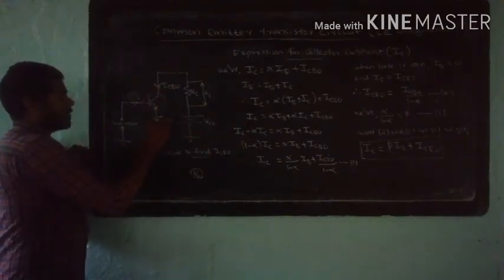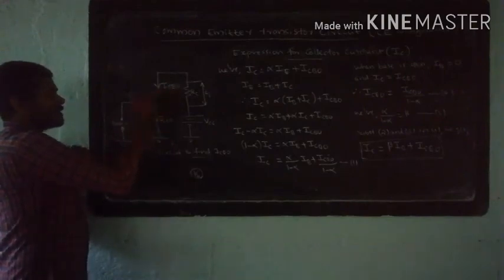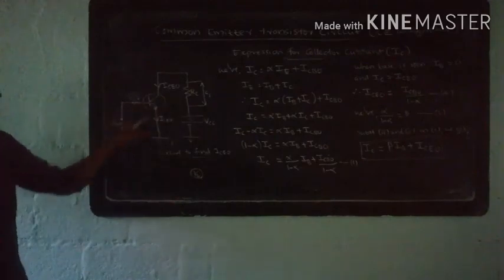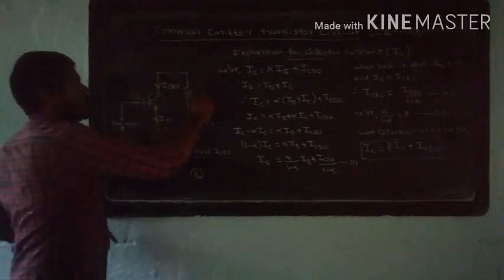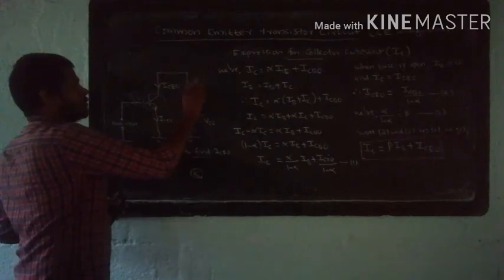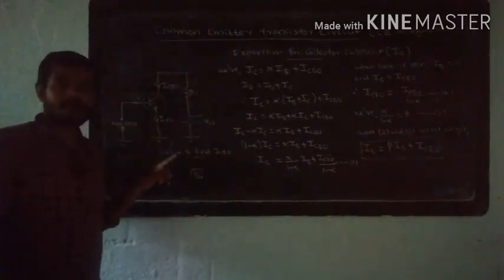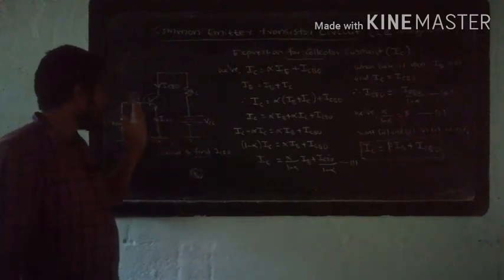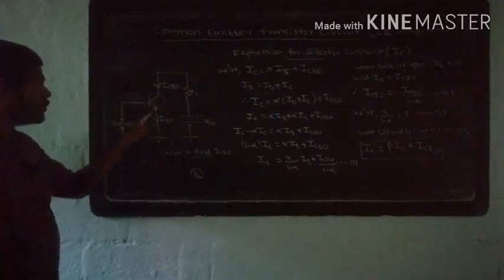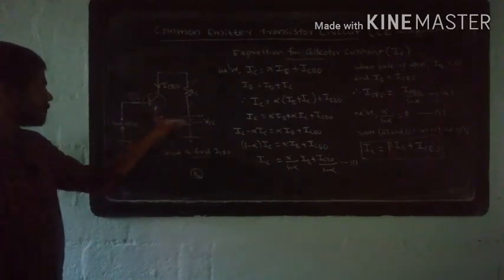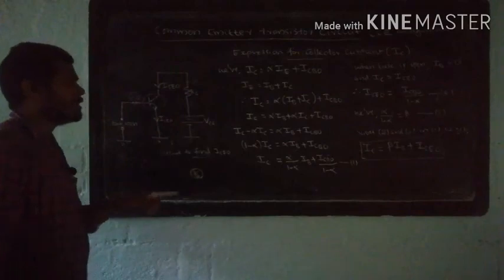ICEO is the collector-emitter current when base is open. Since IB is zero, IE equals IC plus IB gives IE equals ICEO plus 0 equals ICEO. We then find the ICEO value. In the ICEO circuit, the base is open and grounded, with supply VCC connected, and we introduce the ICEO circuit.